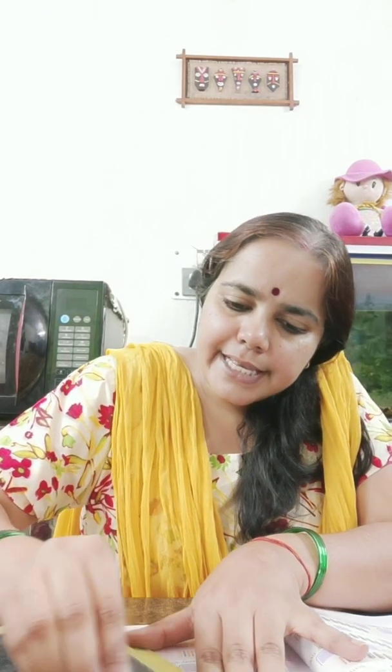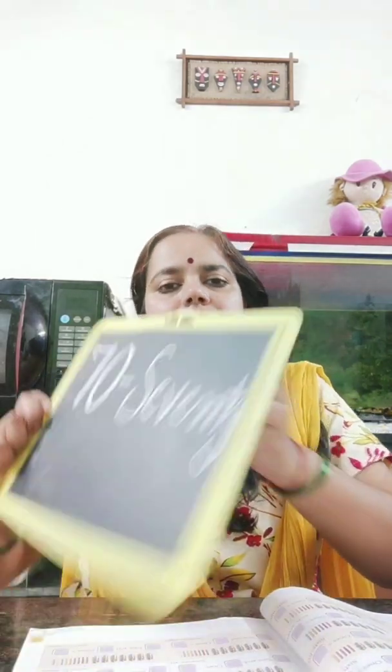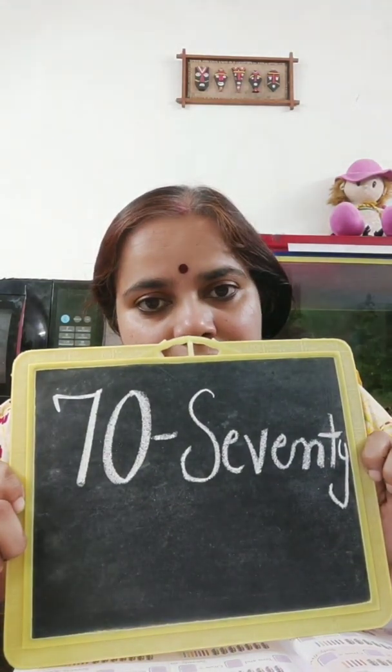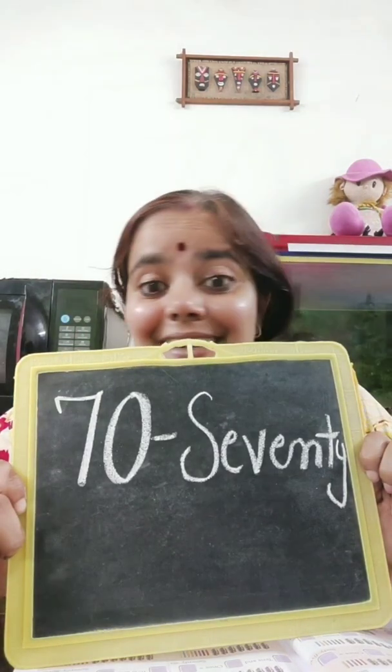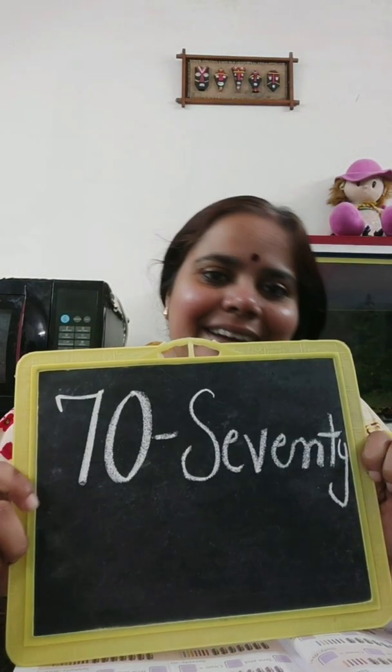Very good. And after 60, what will we write? 61, 62, 63, 64, 65, 67, 68, and 69. These spellings are given on page number 66. Then after 69, we will go to 70. And what is the spelling of 70? S-E-V-E-N-T-Y. That is 70. Learn this spelling.